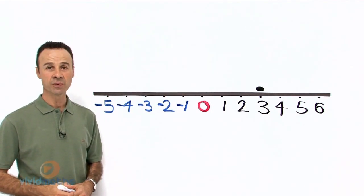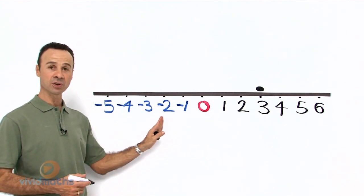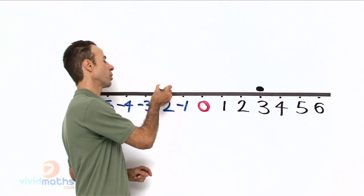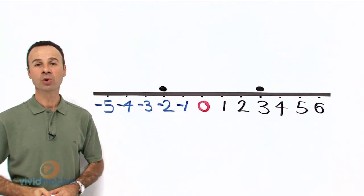If someone said could you find minus 2 for me, you go to the 0, go to the left 2 points, and you just put a point there. So that is pretty easy, nothing could be simpler.